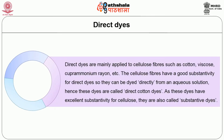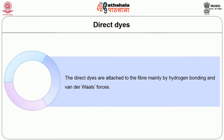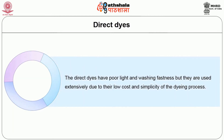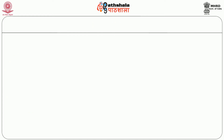Direct dyes are mainly applied to cellulosic fibers such as cotton, viscose, cuprammonium rayon, etc. The cellulosic fibers have good affinity and substantivity for direct dyes, so they can be dyed directly from an aqueous solution — hence these types of dyes are called direct cotton dyes. These dyes have excellent substantivity for cellulose and are also called substantive dyes. The direct dyes are attached to the fiber mainly by hydrogen bonding and van der Waals forces. The direct dyes have poor light and washing fastness, but they are used extensively due to their low cost and simplicity of the dyeing process.